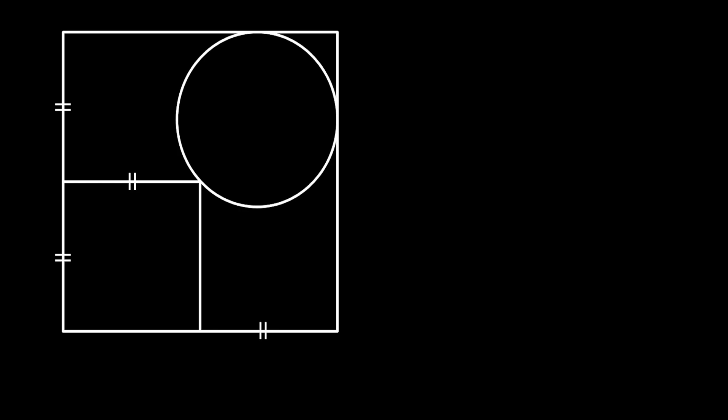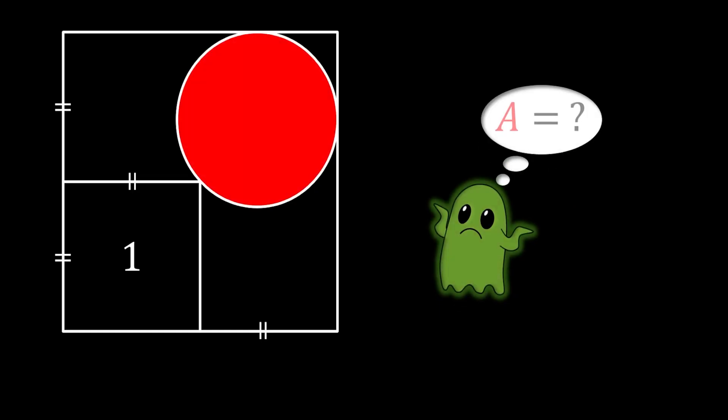Now, if the area of the small square is one squared unit, is it somehow possible for us to calculate the area of the red circle?